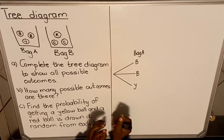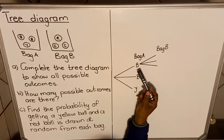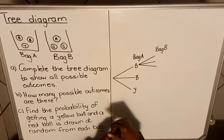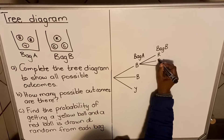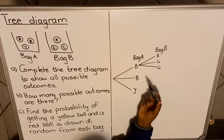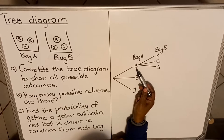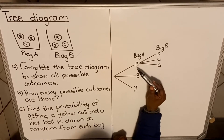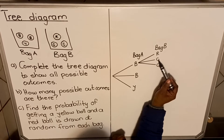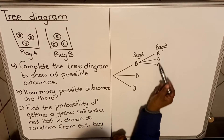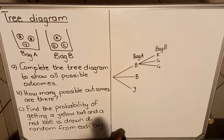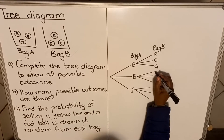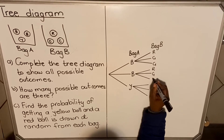Let's draw the tree diagram for Bag B. If you took out a blue ball first, in the second bag there are three options: you could take out a red one, a green one, or a green one. So if you took out a blue ball first, you could take out the red ball next, or a green ball, or another green ball. You have three options in Bag B. If you took out the second blue ball first, you can again take out a red one, a green one, or a green one.